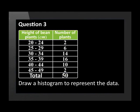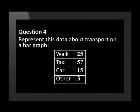Draw a histogram to represent the data. Now let's try a bar graph with question four. Represent this data about transport on a bar graph: walk 25, taxi 57, car 15, other 3.